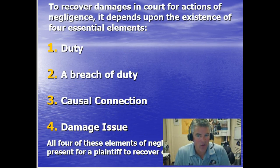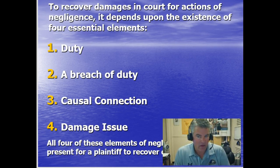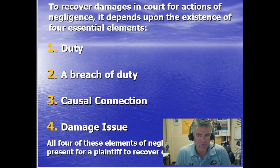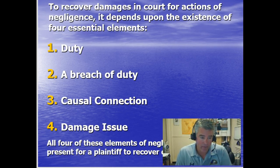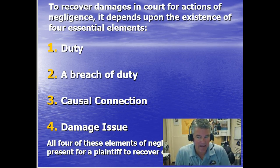To recover damages in court for actions of negligence, it depends upon the existence of four essential elements. The first is duty. A duty, or obligation, is recognized by law requiring a person to conform to a certain standard of conduct for the protection of others against unreasonable risk. It must be shown that the individual — the defendant — had a duty to the person, or the plaintiff, who was injured. This implies that a special relationship exists between the injured person and the alleged wrongdoer, with a duty to not expose the person to unreasonable risk or injury.